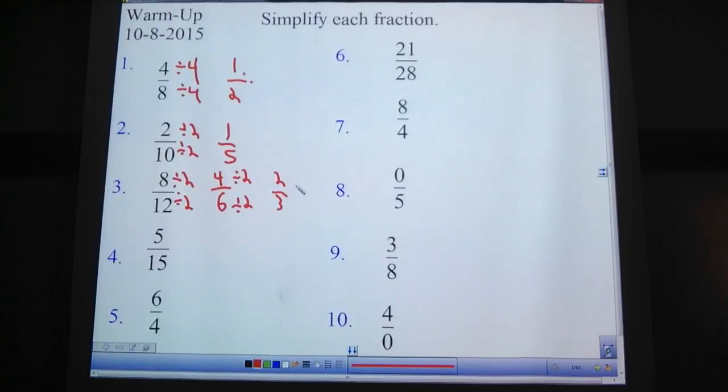Here, there's quite often multiple options. We can divide them each by two. That would give us four over six. We can divide by two again, and that would give us two over three. The other thing you could do is, what if we divided by four right away? Eight divided by four is two. Twelve divided by four is three.